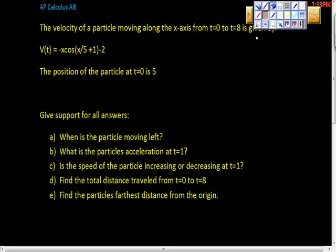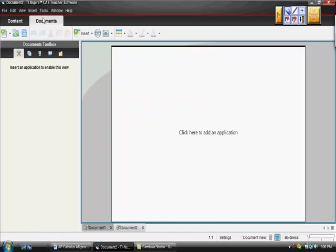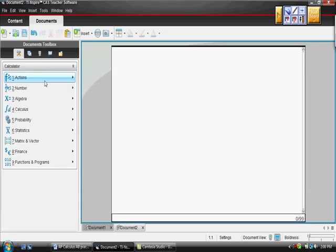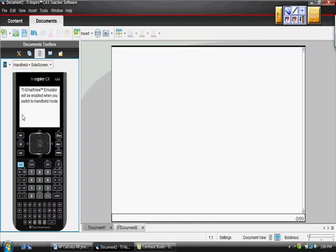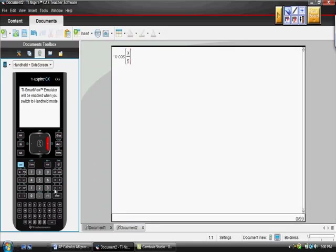First thing I'm going to do is go to the calculator. I'm going to insert calculator. This is a velocity function, so I'd like to type this function in. It is negative x times cosine of x over 5 plus 1, quantity minus 2.